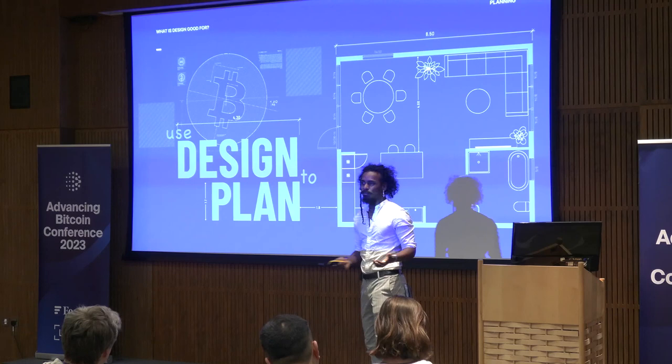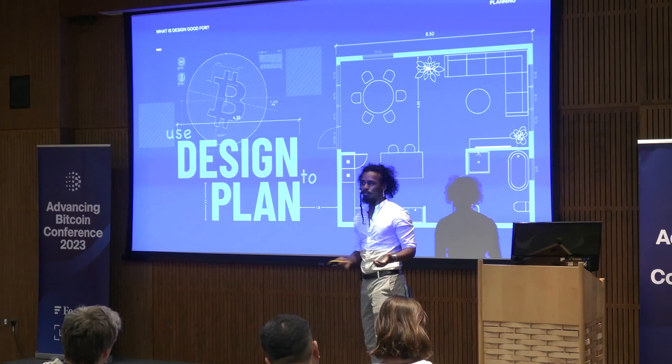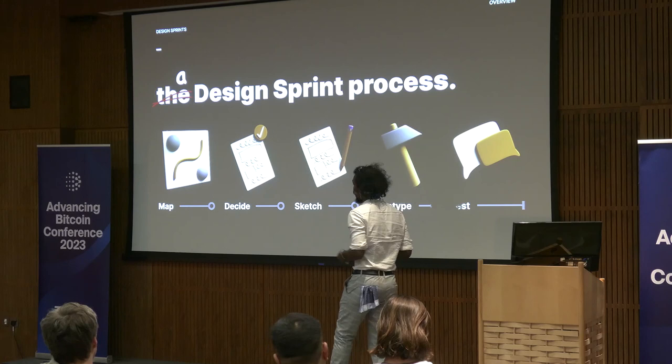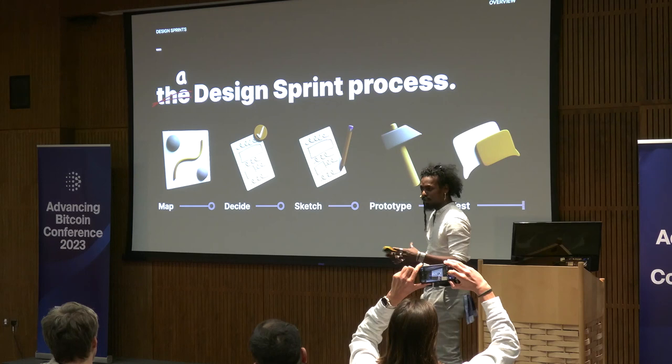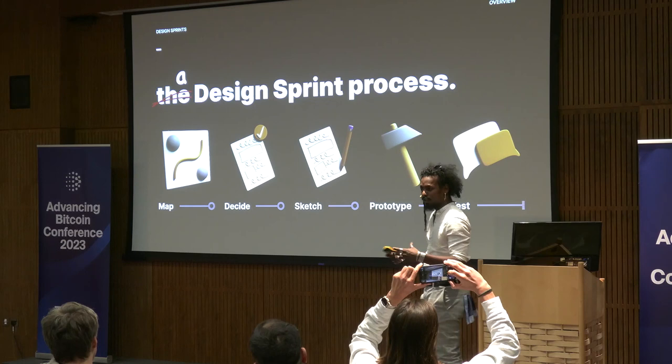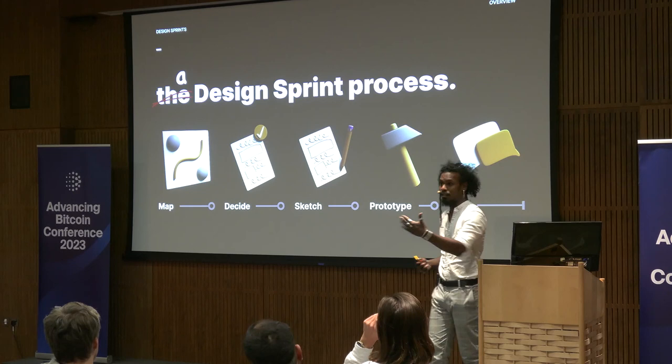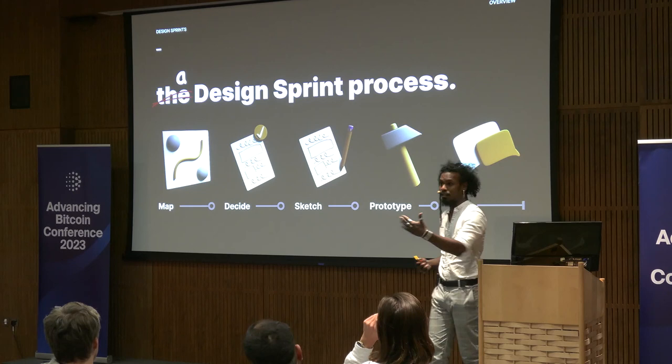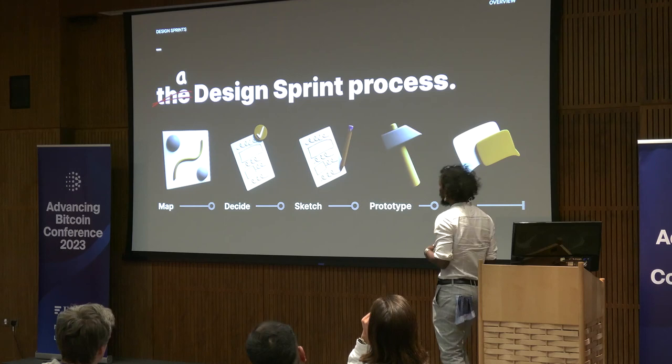This design sprint process is about five steps. First step is to map. Then we decide. Then sketching — basically sketching out some solutions. Then prototype — that's where it gets more into visual design. And test. Testing is important because just as you test your code, designers need to test behavior. Let me give you a dive into one of the projects that came into the community.